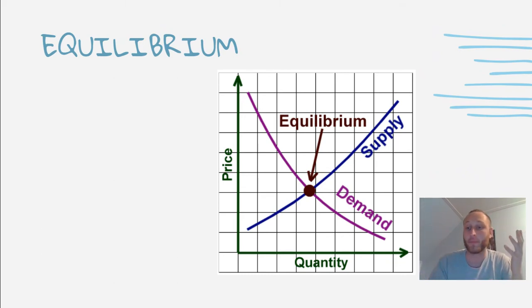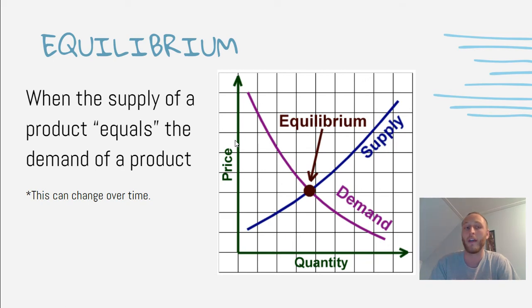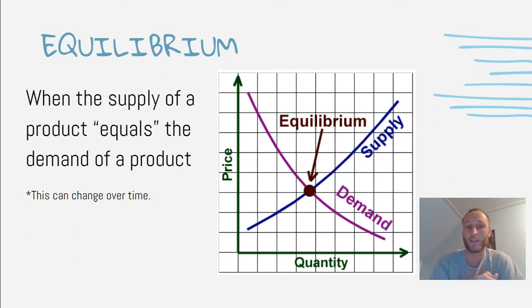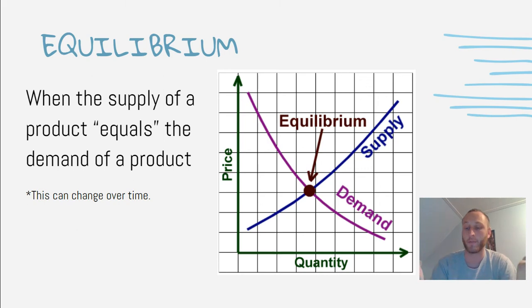As you work with supply and demand, if you're a store selling products, you're trying to reach what's called equilibrium — or it eventually happens naturally. Once the supply and demand meet at an equal amount, the price will kind of stay set for a while. When the supply of a product equals the demand, this is called equilibrium. It can change over time — like COVID-19 causing demand to drop quickly — but equilibrium is the balancing point where stores typically set their prices.